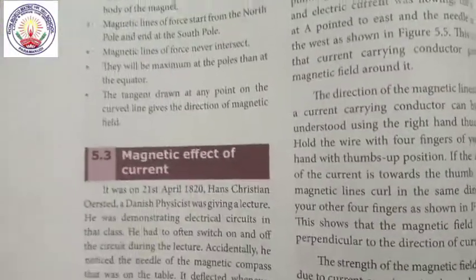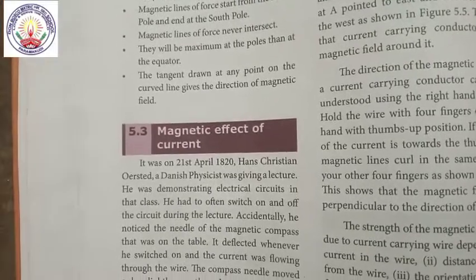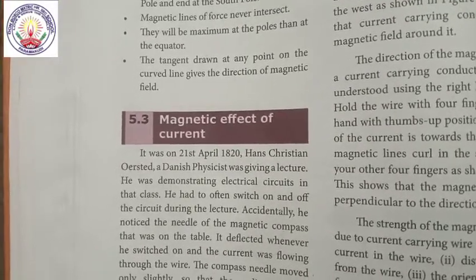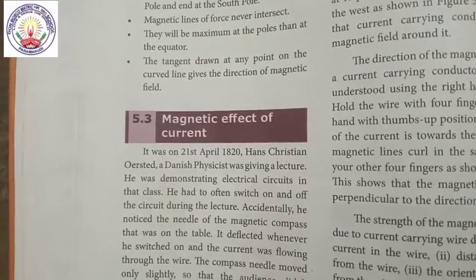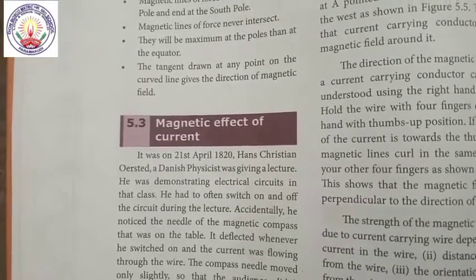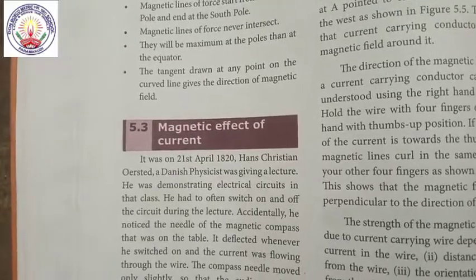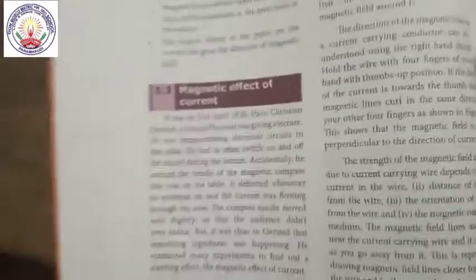Magnetic effect of current. It was on 21st April 1820, when Christian Oersted, a physics professor, was giving a lecture. He was demonstrating electrical circuits in the class. He had to often switch on and off the circuit during the lecture. Accidentally, he noticed the needle of the magnetic compass on the table deflected whenever the current was flowing through a wire. The compass needle moved only slightly so the audience didn't even notice.